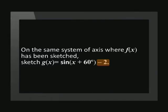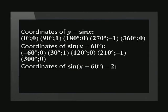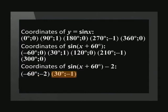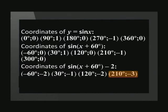Looking at the equation again, the value of q is negative 2, which means we subtract 2 from each y-coordinate. Our final coordinates are: (-60, -2), (30, -1), (120, -2), (210, -3), and (300, -2).